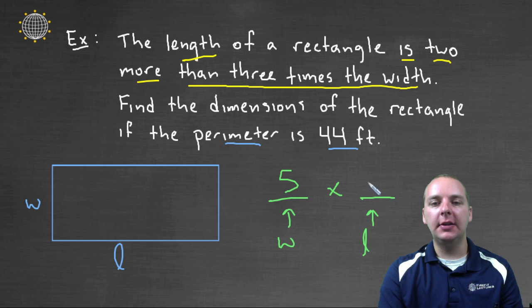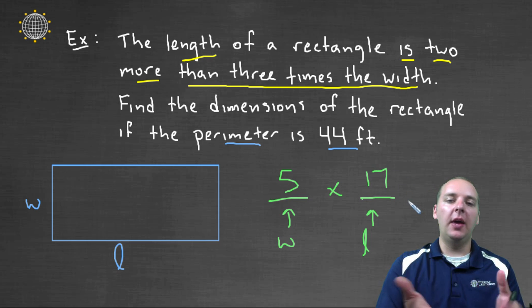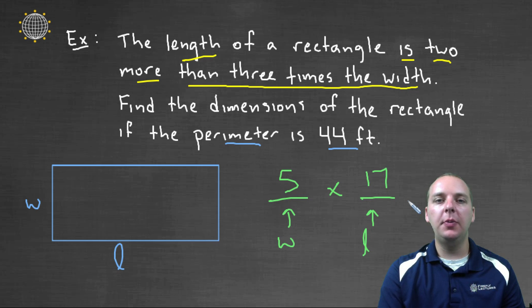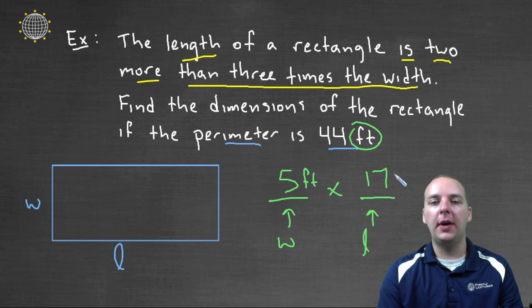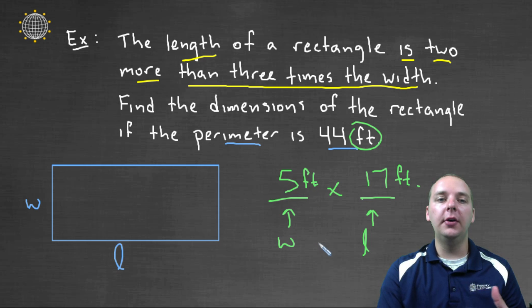Alright, now the last thing we need to do is, we've answered the question that they asked, but we also have to be careful with units. We can't just say five by seventeen, because five by seventeen what? Inches? Miles? Pounds? I mean what units are we using here? Well you just scan the problem, and it looks like all of our units were in feet. So the dimensions of our rectangle would be five feet by seventeen feet, and it's important to have these units in here to help a reader understand, or put into perspective just how wide and long this particular rectangle is.